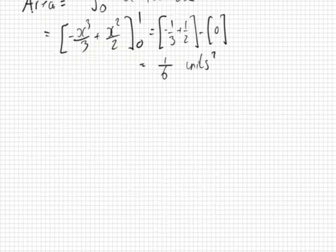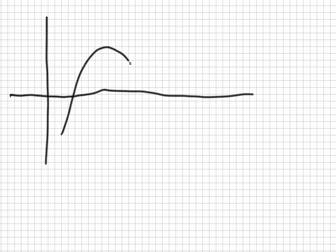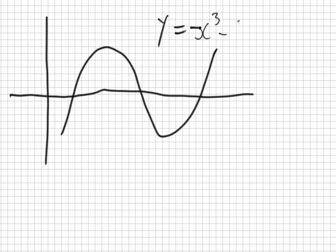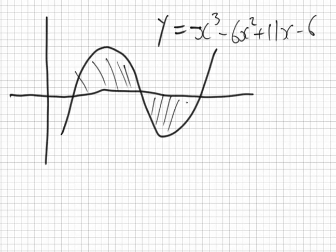We've done a linear and a quadratic example. Now let's look at a cubic: x cubed minus 6x squared plus 11x minus 6. I want this area and this area. In an exam, part A would be to find the roots of the cubic, and part B would be to find the area.